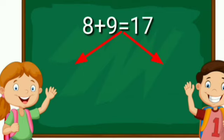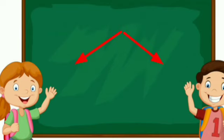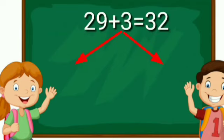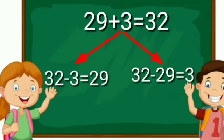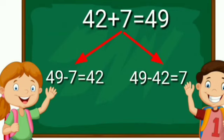Solve the examples. 8 plus 9 is equal to 17, therefore 17 minus 9 is equal to 8 and 17 minus 8 is equal to 9. 29 plus 3 is equal to 32, therefore 32 minus 3 is equal to 29 and 32 minus 29 is equal to 3. 42 plus 7 is equal to 49, therefore 49 minus 7 is equal to 42 and 49 minus 42 is equal to 7.